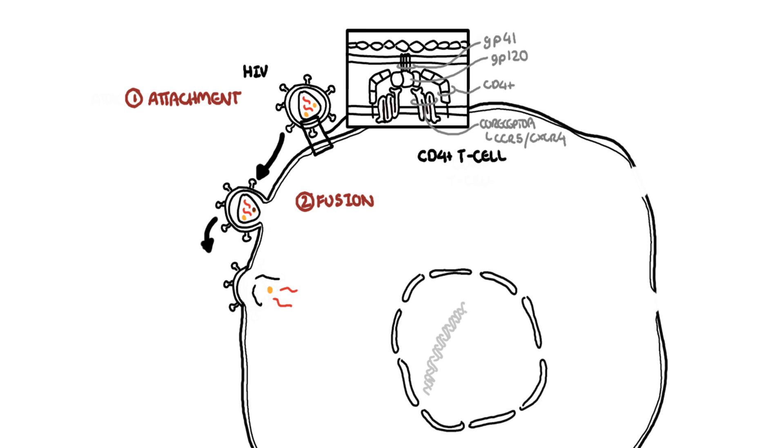Fusion releases the capsid with the viral content, including the enzymes necessary for viral survival. The third step, reverse transcription, involves the virus reading its own genetic RNA material and then making a DNA copy of it with its enzyme reverse transcriptase.